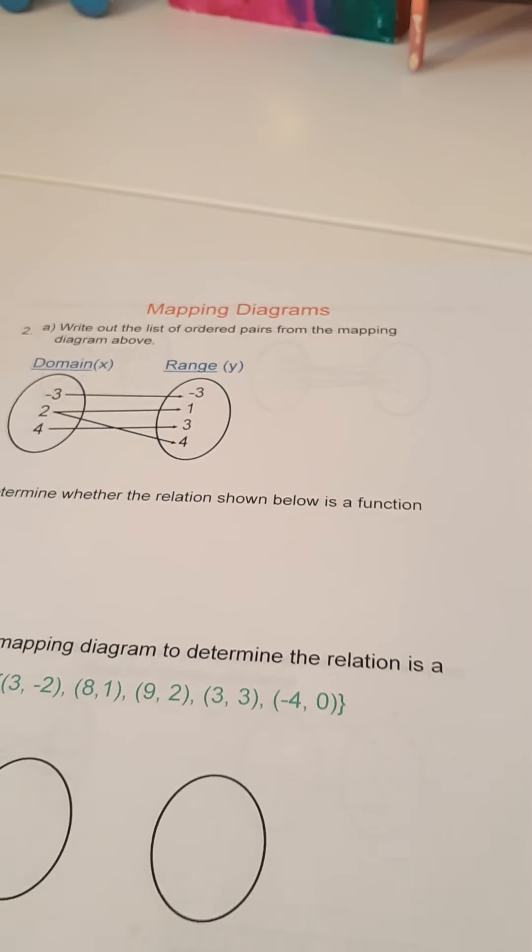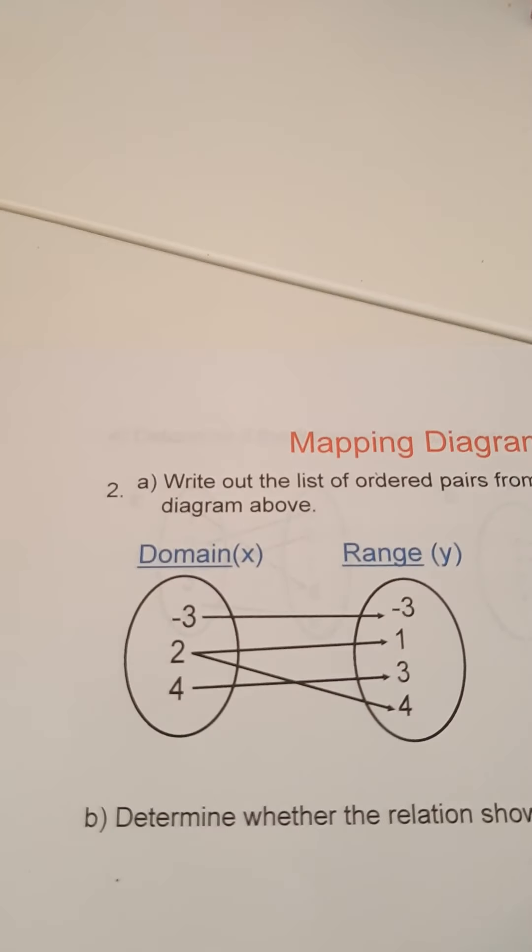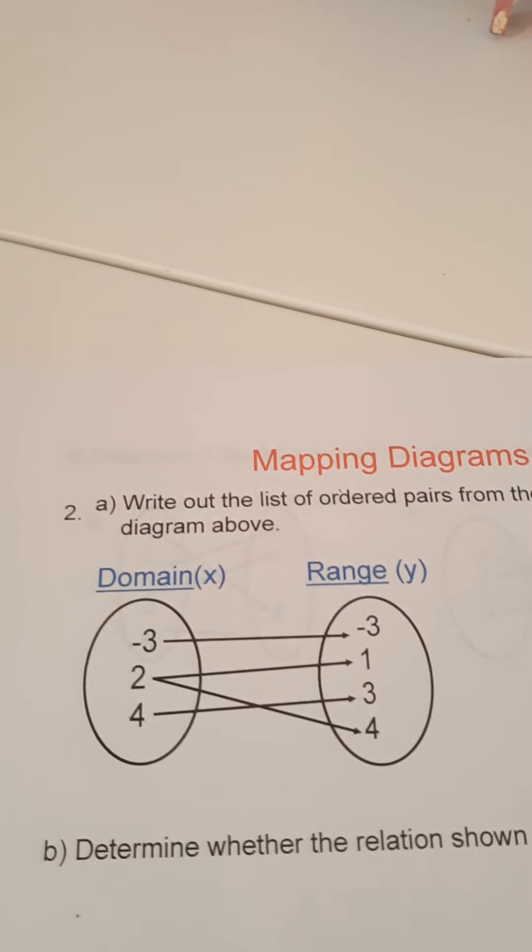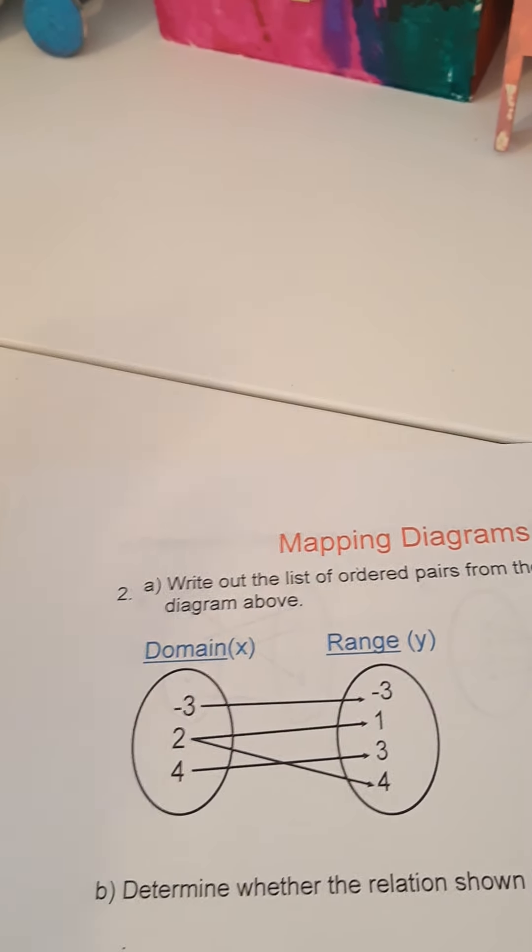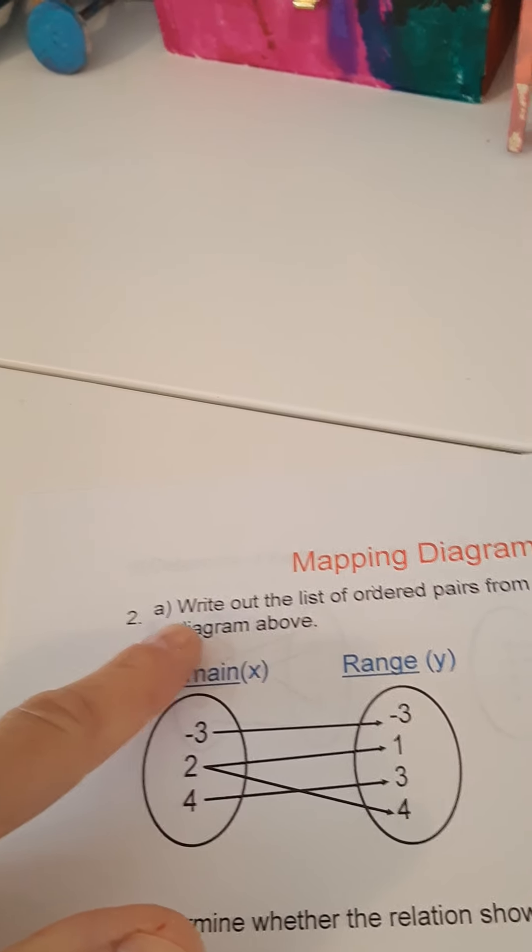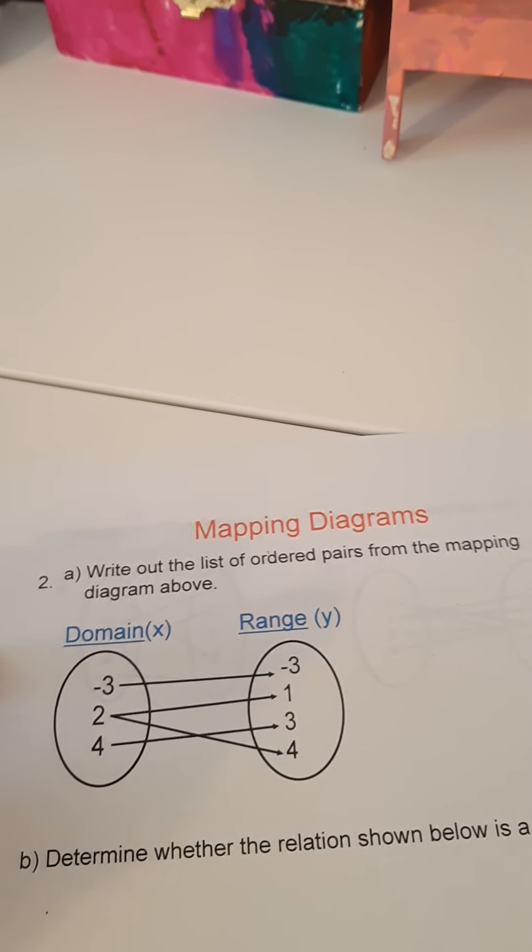All right, so that was ordered pairs, coordinates. Next is mapping diagrams. So this is just a different way to display a coordinate or coordinates. Meaning, if you look, part A says write out the list of ordered pairs from the mapping diagram above.